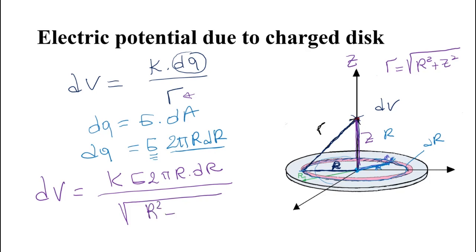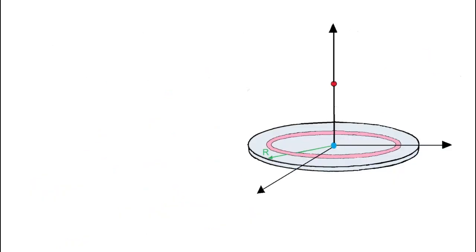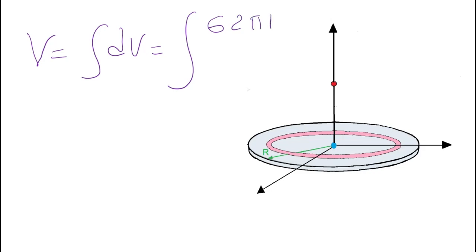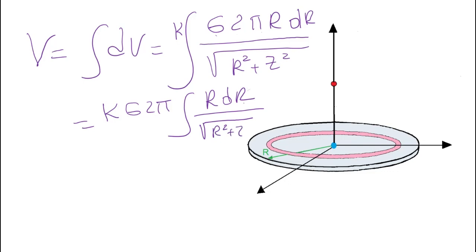This is the electric potential produced by the charge on the pink area. But our objective is to find the total electric potential, so we sum all these pink areas. The total electric potential is the integral of dV. We have dV = sigma · 2π·r·dr · k over the square root of r² + Z². Since sigma, 2π, and k are constants, we pull them outside: V = k·sigma·2π · ∫ r·dr / √(r² + Z²).